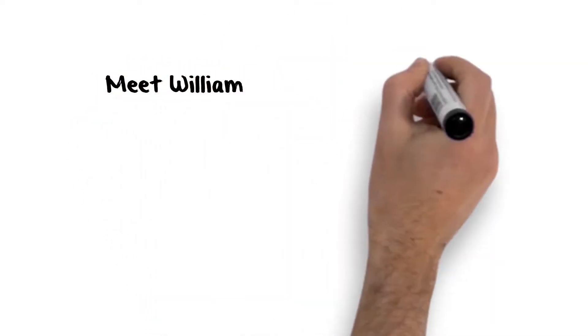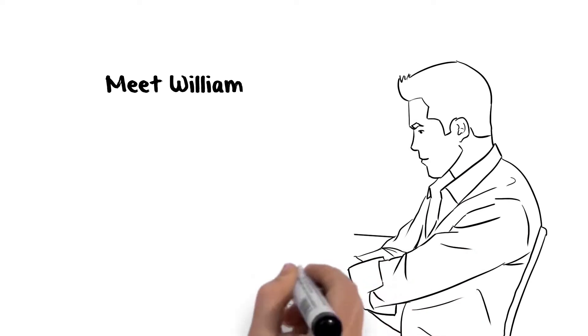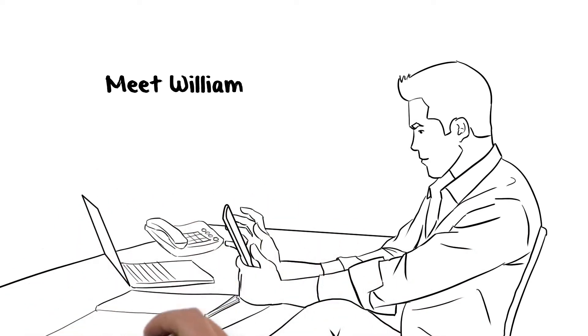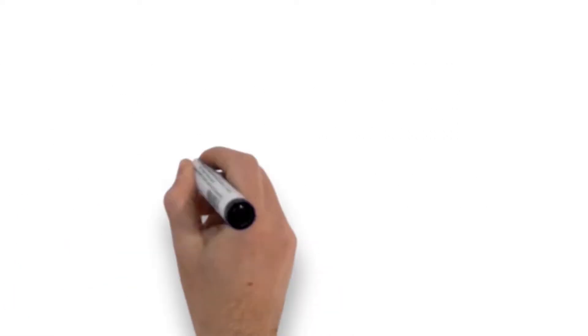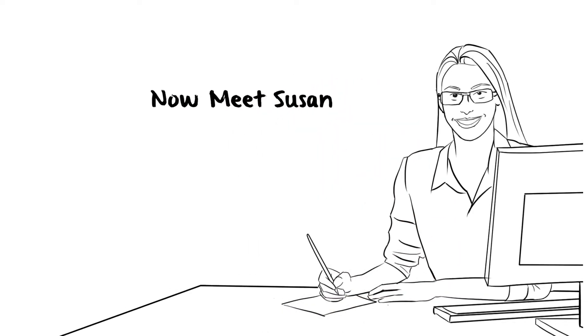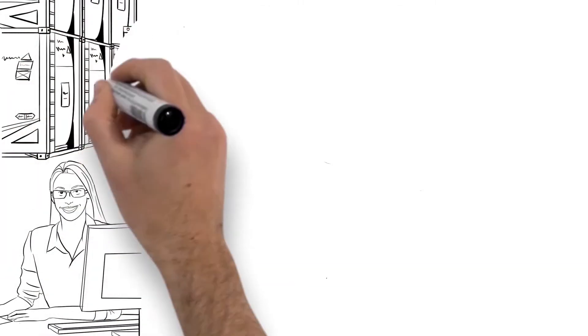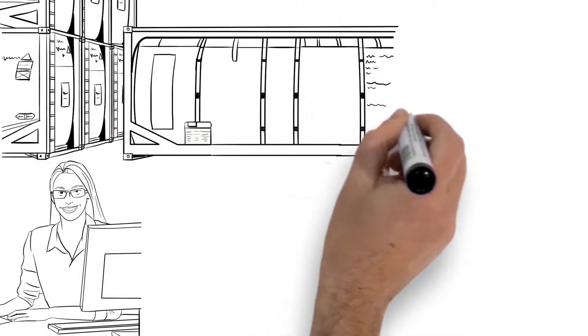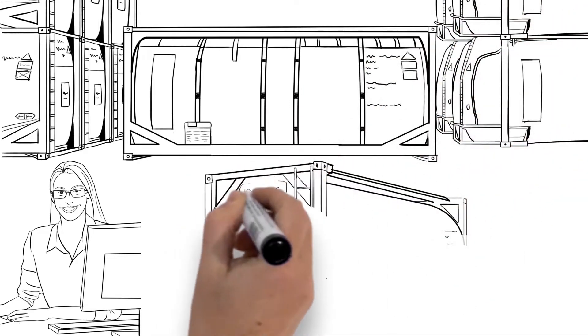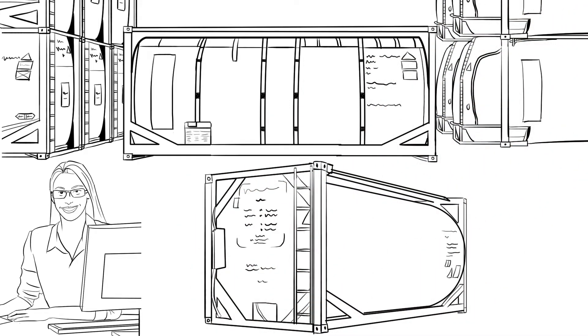Meet William. William supplies industrial parts to manufacturers all over the globe in leased containers. Now, meet Susan. Susan's company owns the specialty containers they ship. But given demand for these tank containers, Susan also needs to ensure they return to home base.